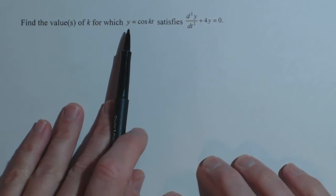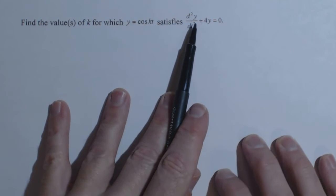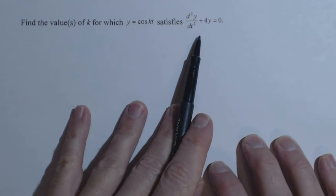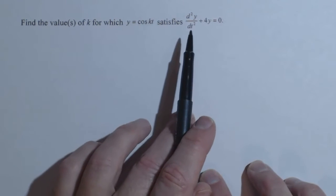So we want to find the values of k for which y equals cosine of kt is a solution to this second-order differential equation. So just like verifying a solution, we're going to do this via substitution.